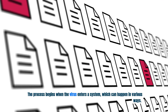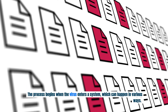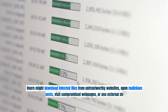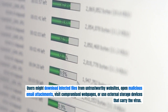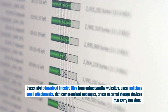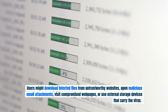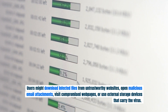The process begins when the virus enters a system, which can happen in various ways. Users might download infected files from untrustworthy websites, open malicious email attachments, visit compromised web pages, or use external storage devices that carry the virus.